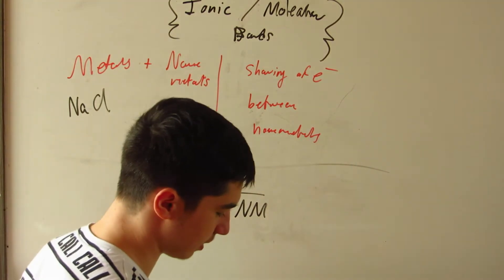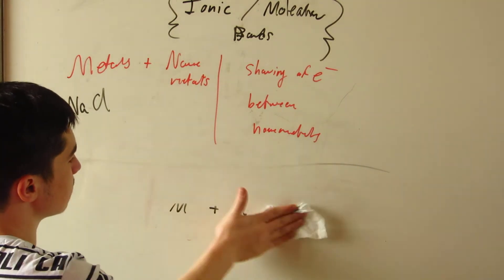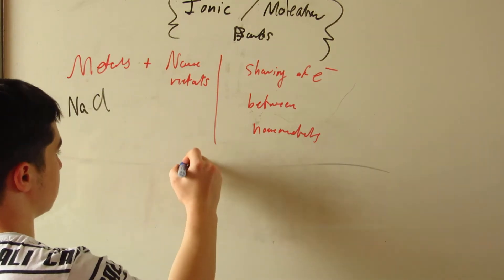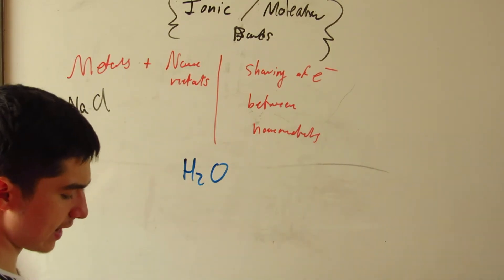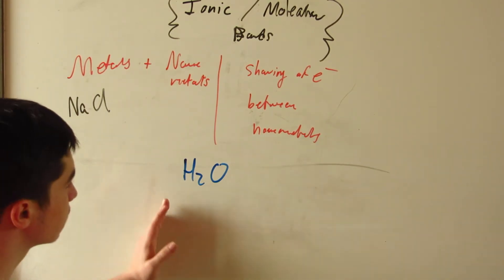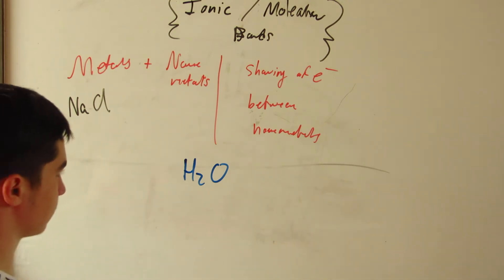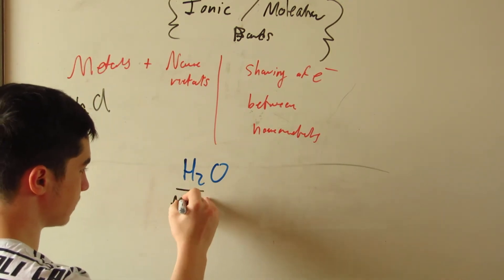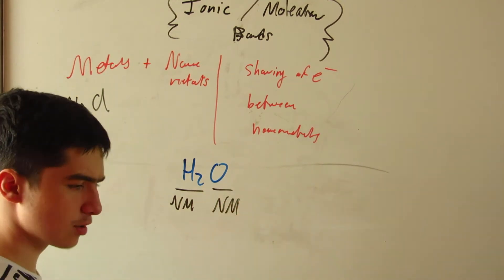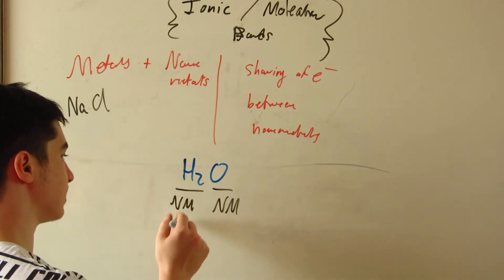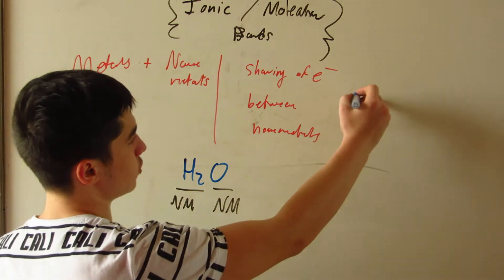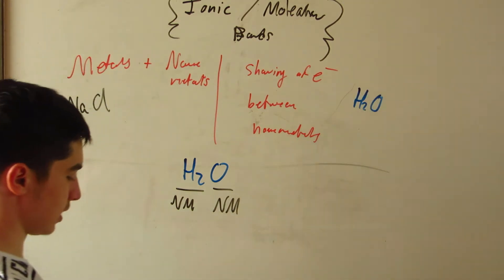Let's take another example: H2O. Is that an ionic compound or a molecule? Let's break it down — we have a nonmetal bonding with a nonmetal. So it's covalent. H2O is an example of a molecular compound, a molecule.